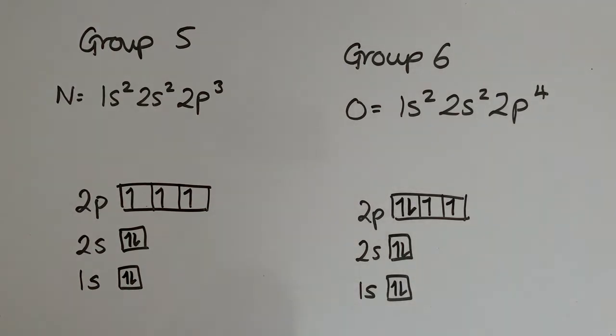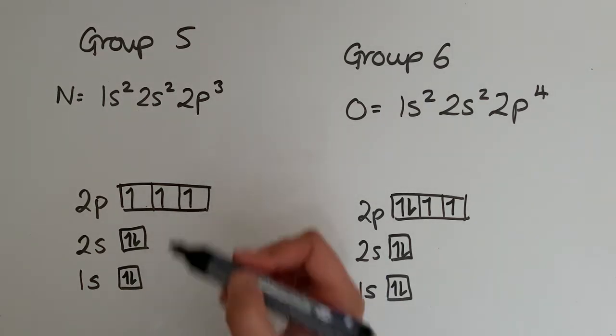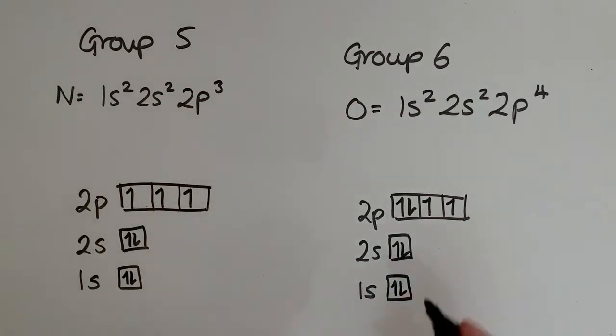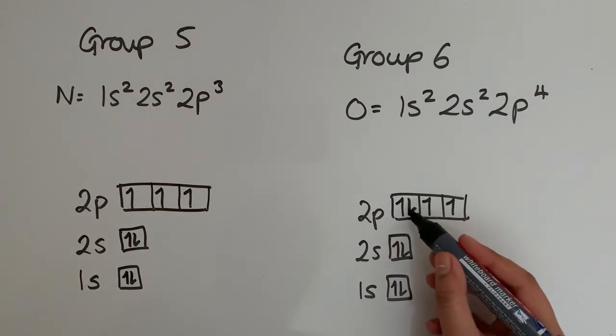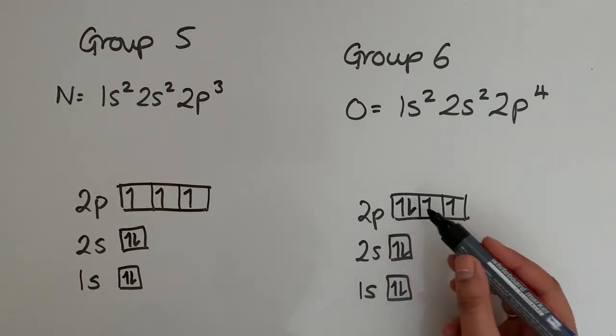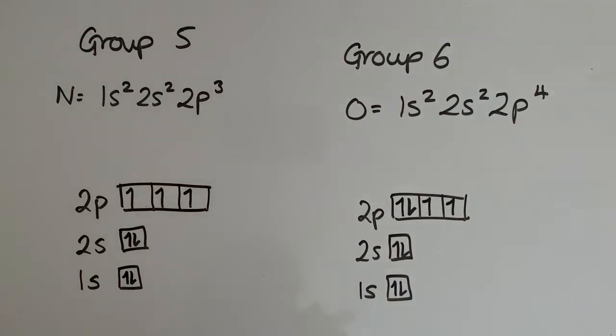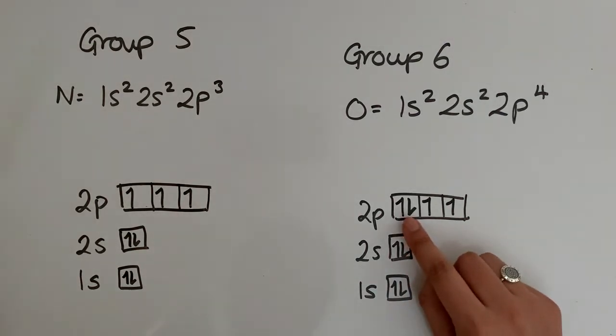Now, when it comes to removing the outer electrons, the first ionization energy for this one will be this electron here or any of these, they're all the same. And for this one, it will be the one that is paired. You also need to know, because you've got two electrons in one orbital, both electrons are negatively charged, so there is going to be repulsion between these two electrons here.